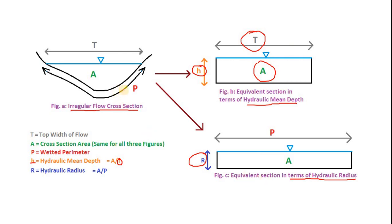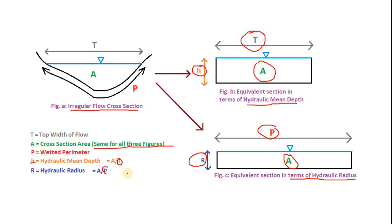Now for the equivalent rectangular section in terms of hydraulic radius, the area will be the same as in all three cases. R multiplied by P gives the area. So R is the hydraulic radius and P is the wetted perimeter. We measure this length and make a rectangular cross section of width P, and area divided by P gives R, that is the hydraulic radius.